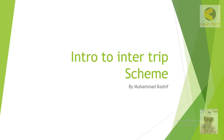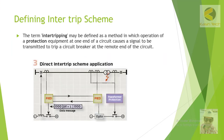Welcome. In this section we will go through the basic concept of the intertrip scheme. The term intertripping may be defined as a method in which operation of a protection equipment at one end of the circuit causes a signal to be transmitted to trip a circuit breaker at the remote end of the circuit.